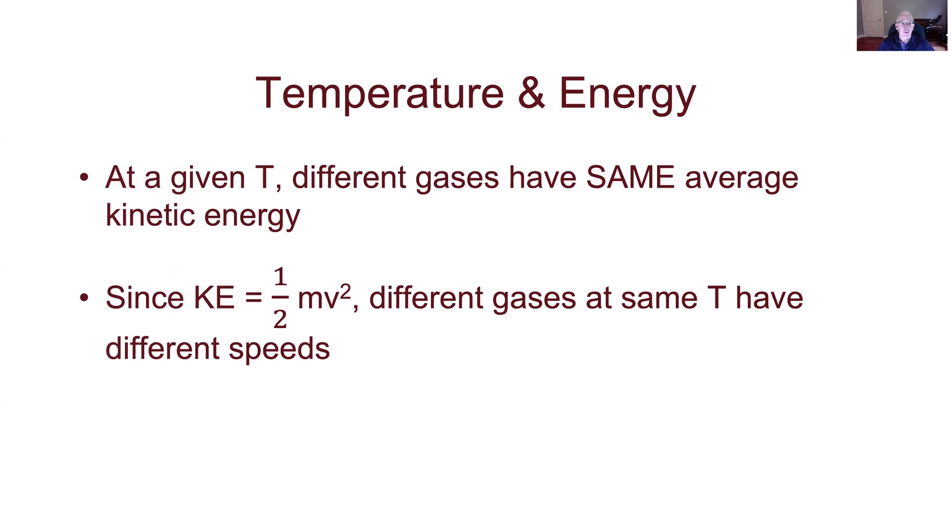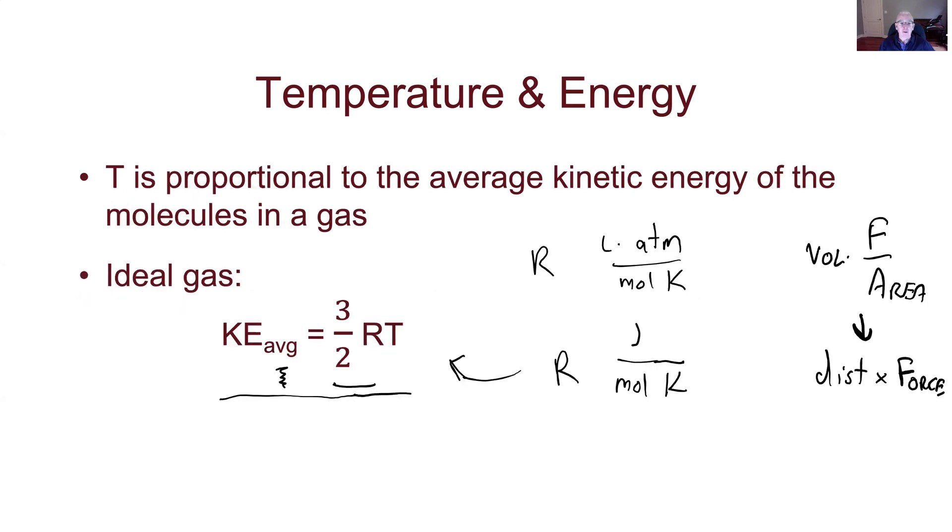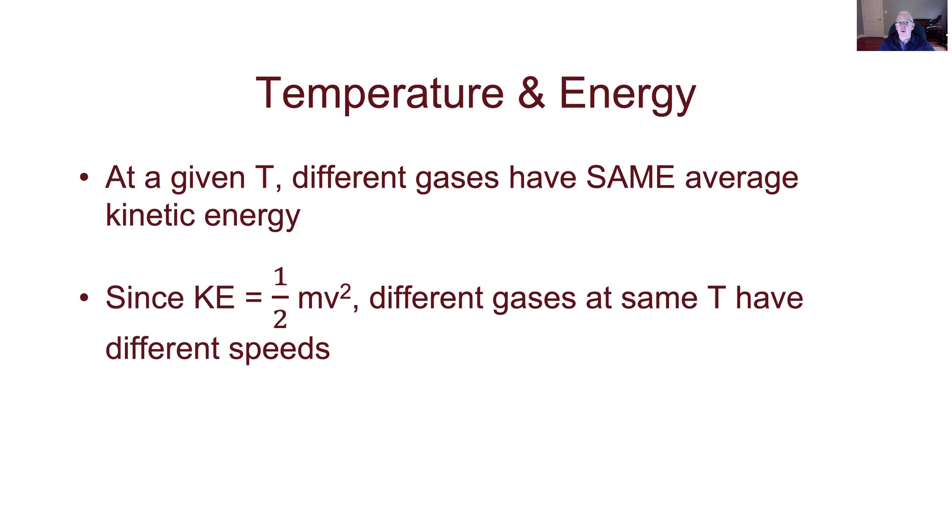If I take that result which said that the kinetic energy is three halves RT, that says the temperature determines that average kinetic energy. So that says at one temperature different gases have the same average kinetic energy because there's nothing in that equation. The three halves RT equation just says that's the energy no matter what the molecule is, because R is universal for every gas. Doesn't matter if the molecules are heavy or light or anything like that. It's also true though that kinetic energy is of course one half mv squared. And so that means if the kinetic energies are the same for different gases at a fixed temperature, then the speeds must be different.